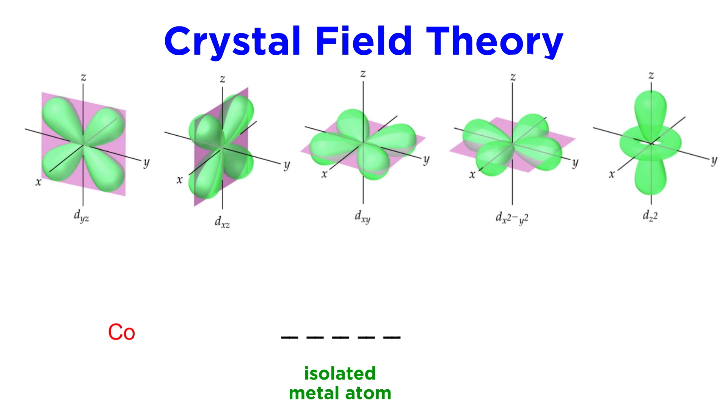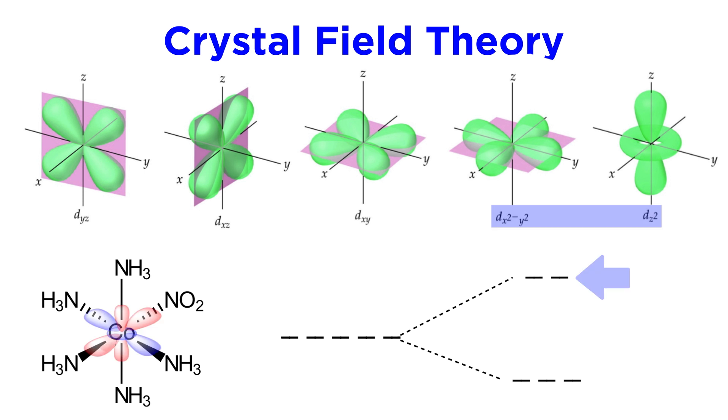For this reason, whereas for an isolated metal atom the d orbitals all have the same energy, in an octahedral complex these two orbitals we mentioned have a higher energy as they point in the direction of ligands, and we refer to them as the eg orbitals, while the other three are the T2G orbitals, which point in between ligands.